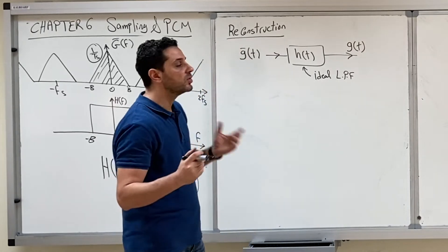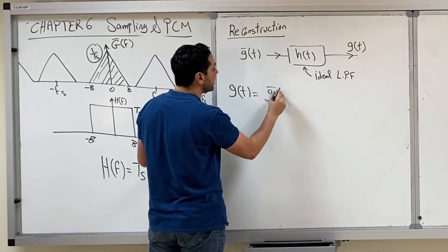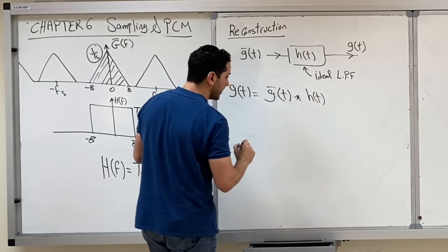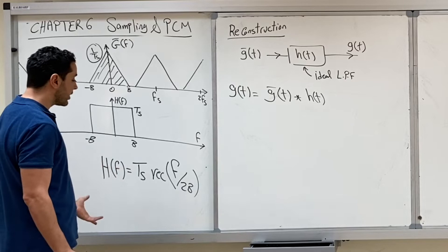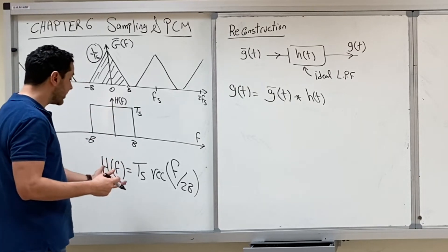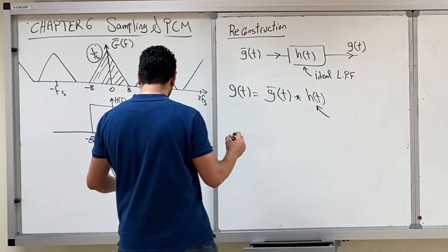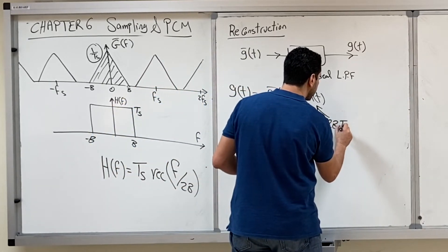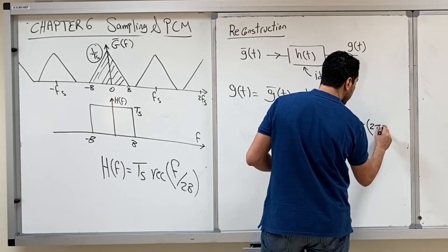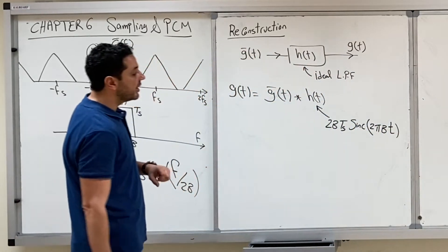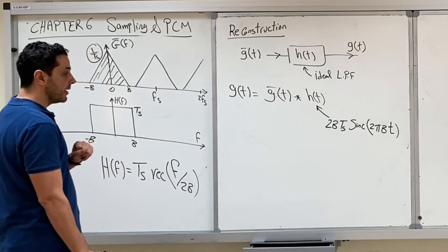This is of course subject to the Nyquist condition that the sampling frequency is greater than or equal to 2B. The original signal will be the convolution between G-bar of T and the filter H(T). Since H(f) looks like a Rect in the frequency domain, in the time domain it will be a sinc, and using the duality property of the Fourier transform we find that H(T) = sinc(2πBT).